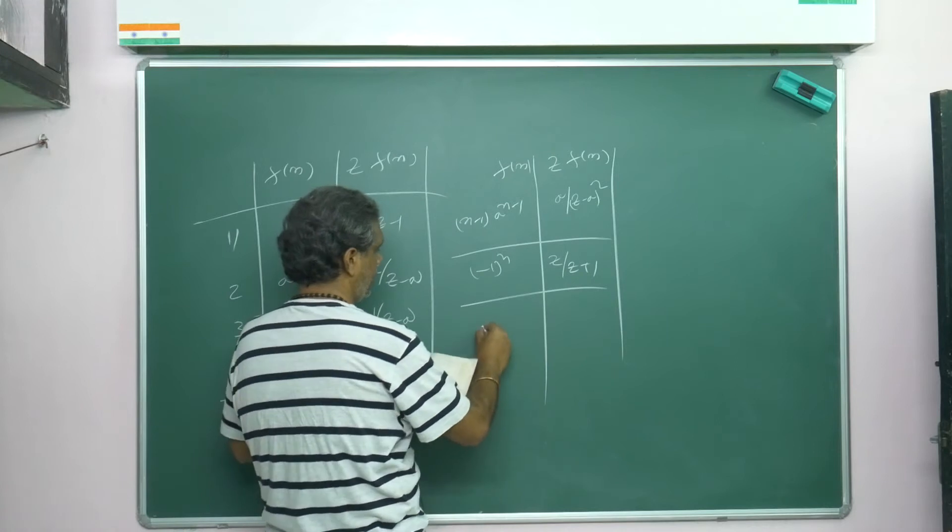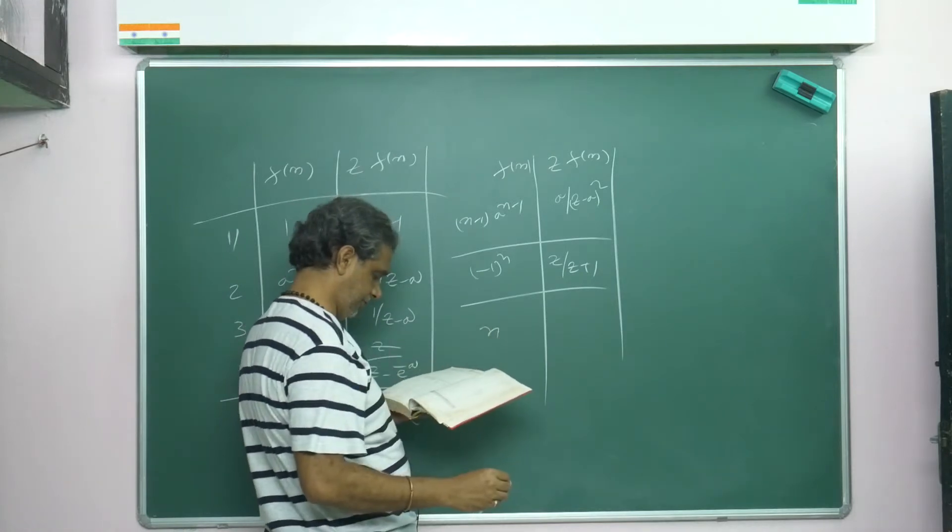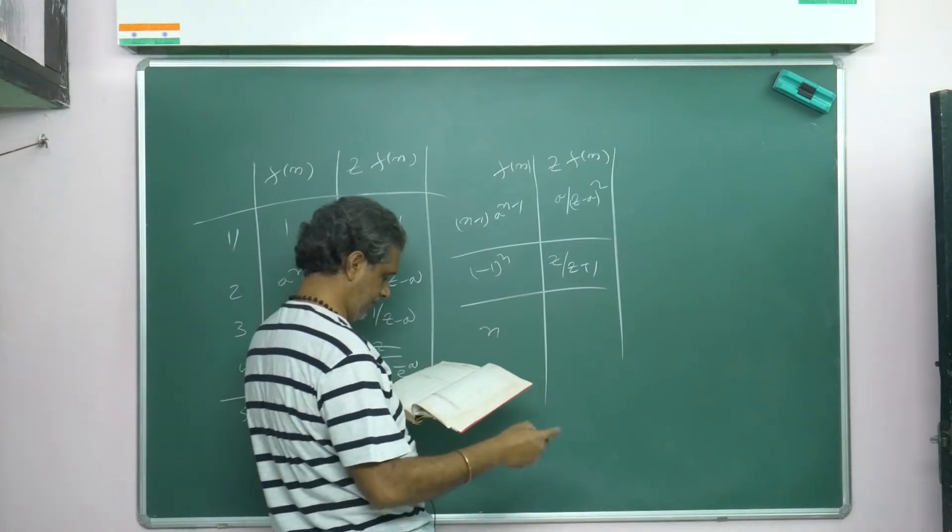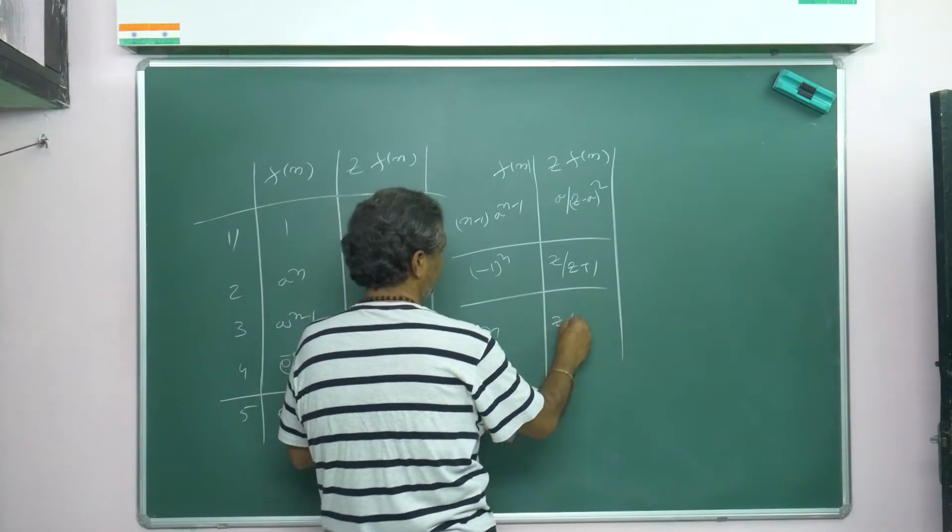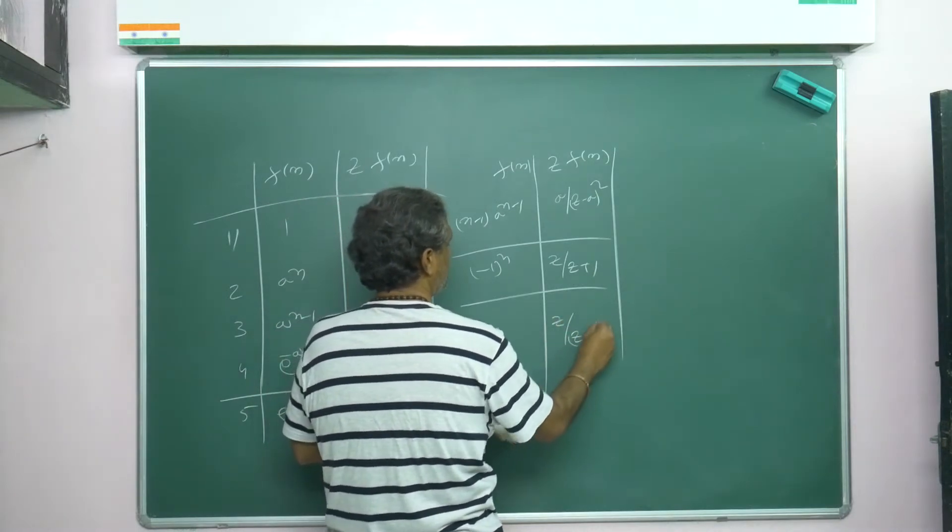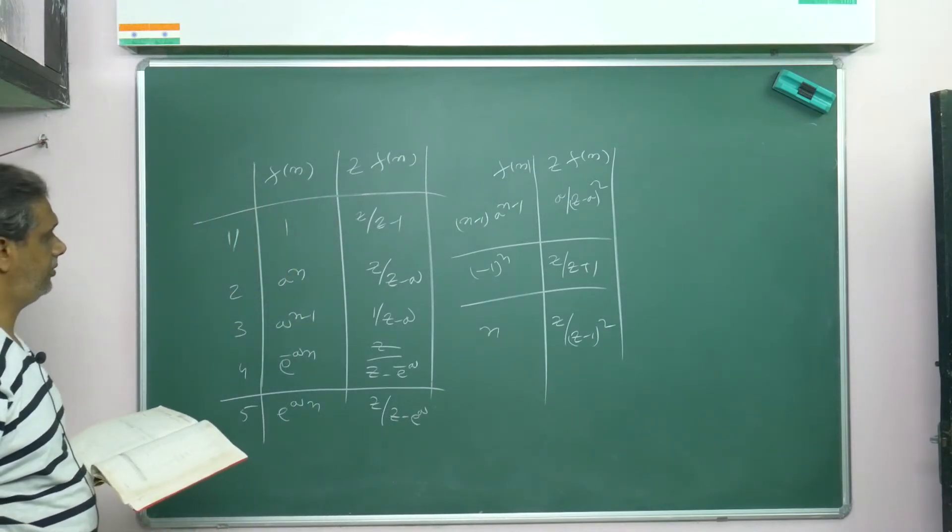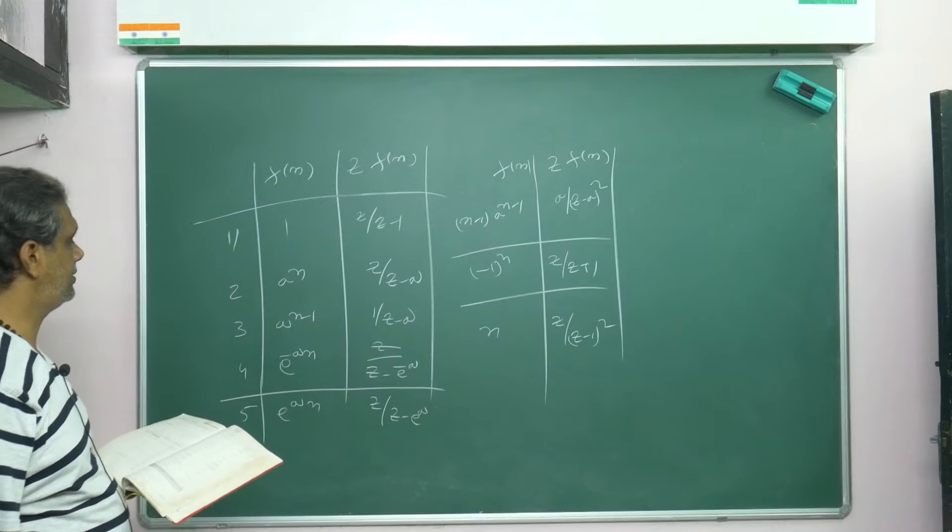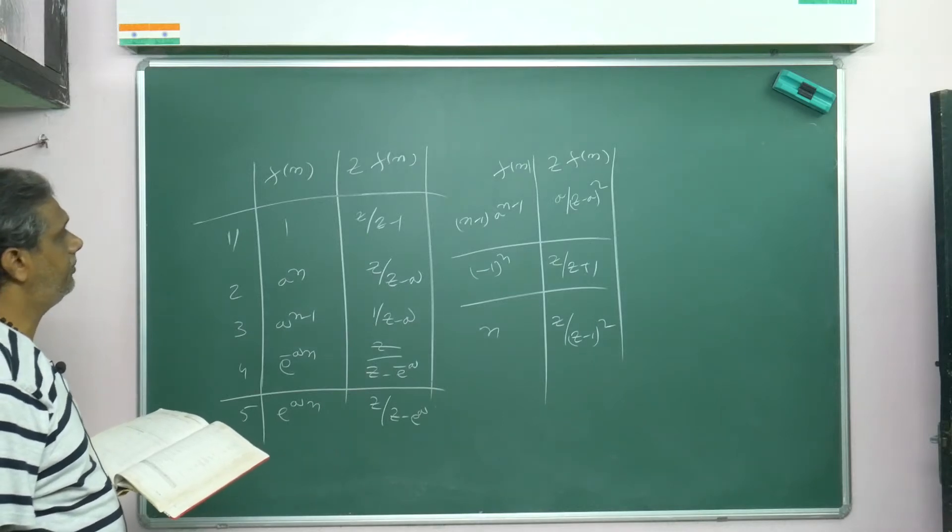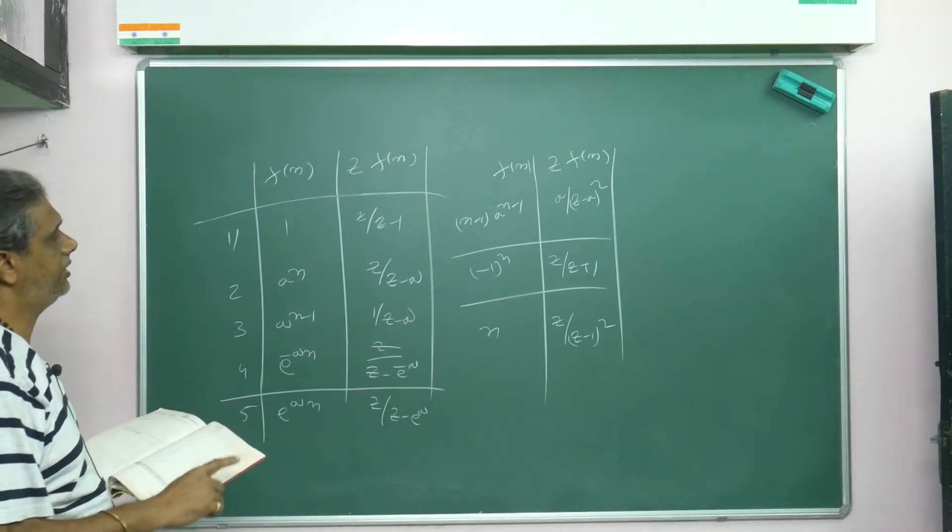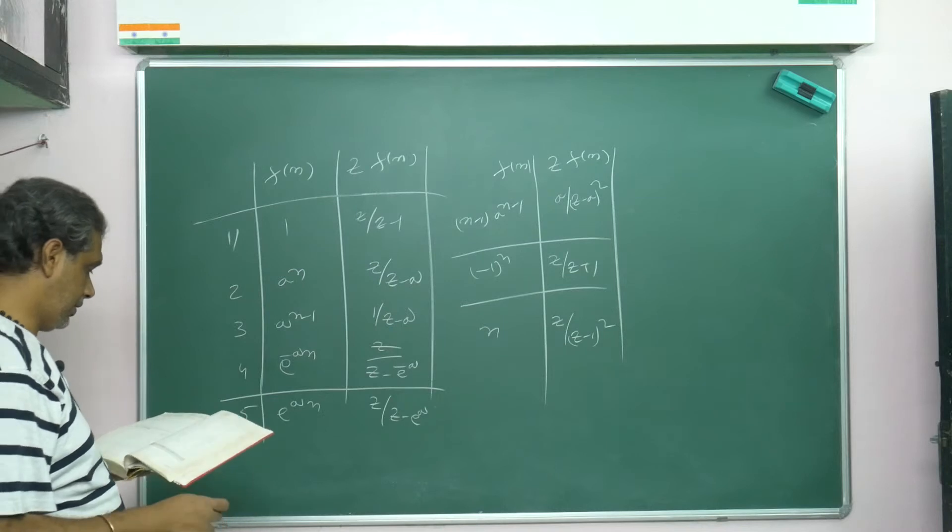Then Z{n} or Z{k} is equal to z/(z-1) whole square. Let's just remember: Z{1}, Z{a^n}, Z{a^(n-1)}, Z{e^(-an)}, Z{(n-1)a^(n-1)}, Z{(-1)^n}, Z{n}. Then we can write...